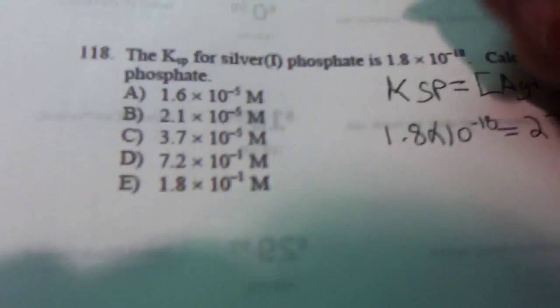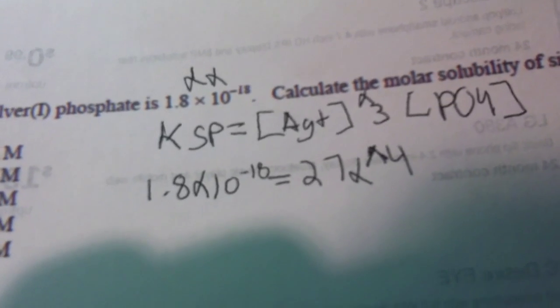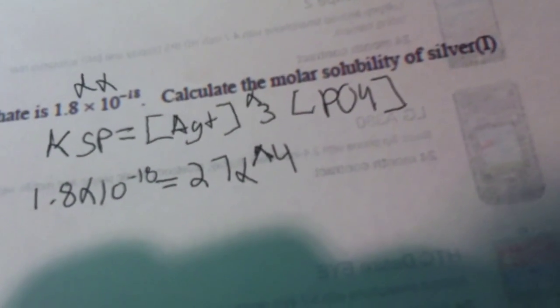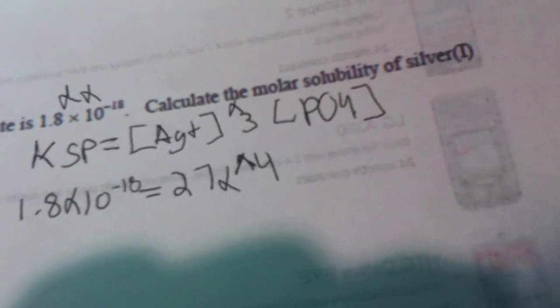So I usually like to start with x times x because that's how it usually ends up. So I've written the formula here for you. It's KSP equals [Ag⁺]³ times [PO₄³⁻].